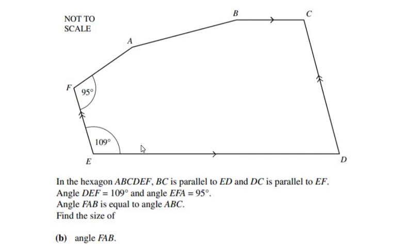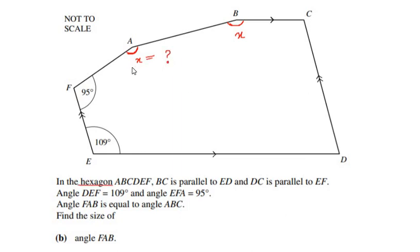Now for part two, we have the same hexagon ABCDEF with the same angles. Angle FAB equals angle ABC, so if we take angle A as x, then angle B is also x. We need to find the size of angle FAB. First, let us find angle D and angle C. Angle D we already found in part A as 71 degrees, using co-interior angles.